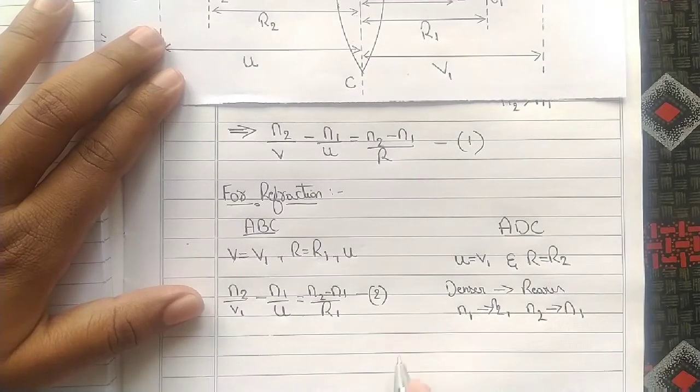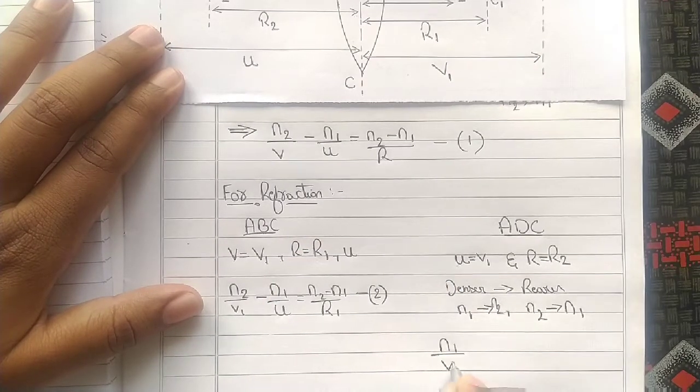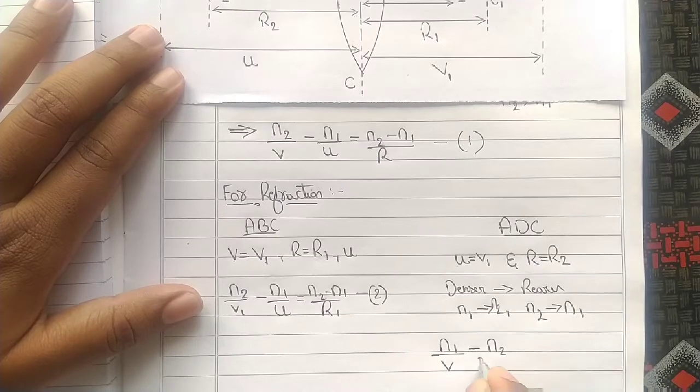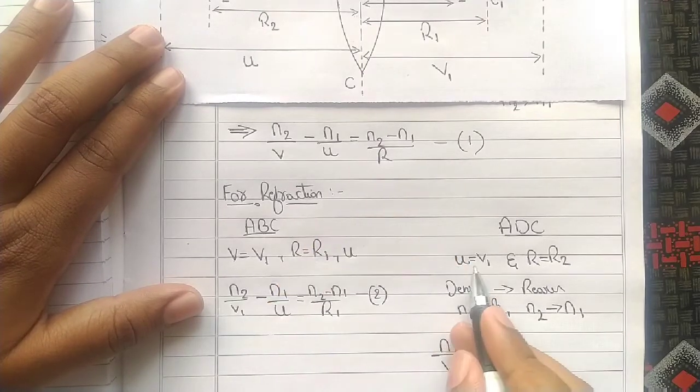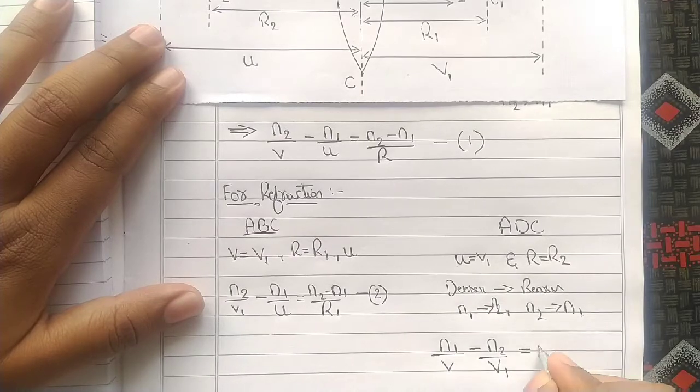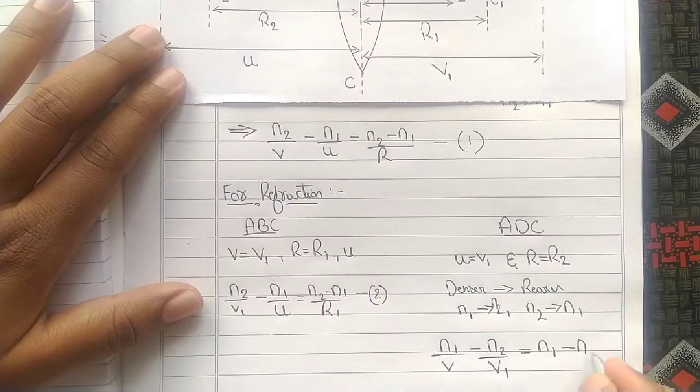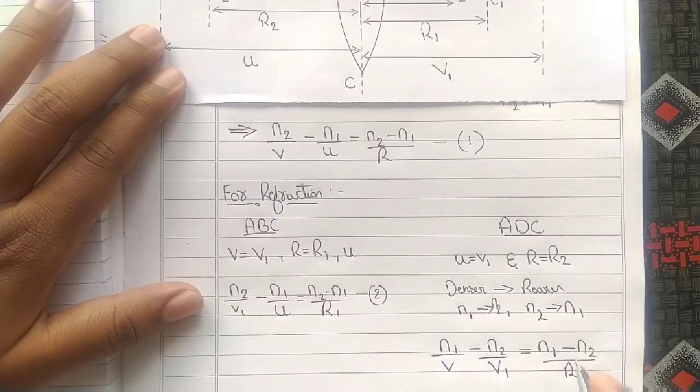So on interchanging, our main equation becomes N1 by V minus N2 by U - U is our V1 - equals N1 minus N2 divided by R, which is R2.